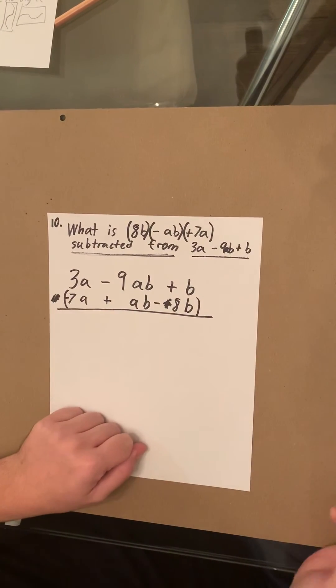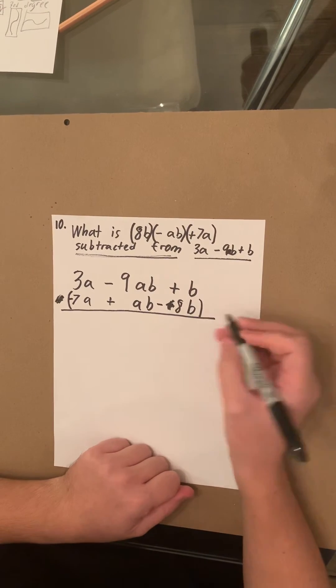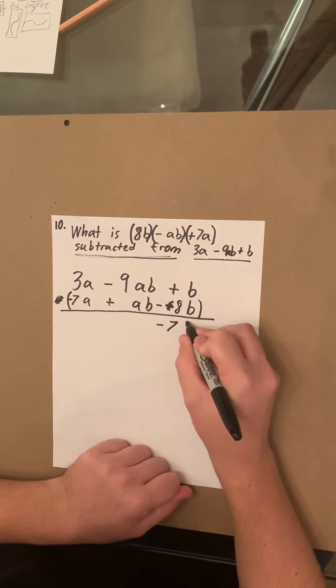Cancel that out so you do not get confused. So now you just solve them straight down. B minus 8B equals negative 7B.